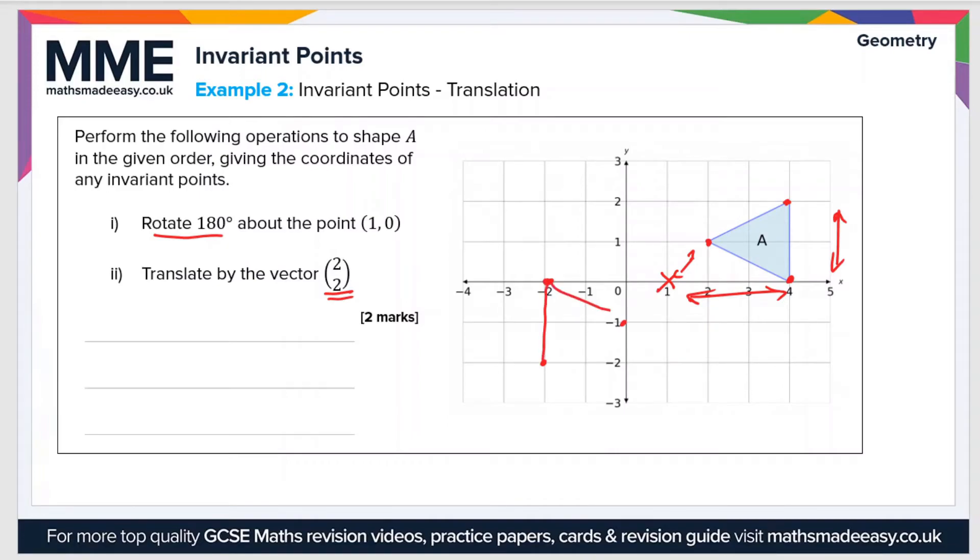So our intermediate step, if you like, gives us this shape here. And I'm just going to rub out some of these things here just for clarity. So the second step then is to translate by the vector 2, 2.